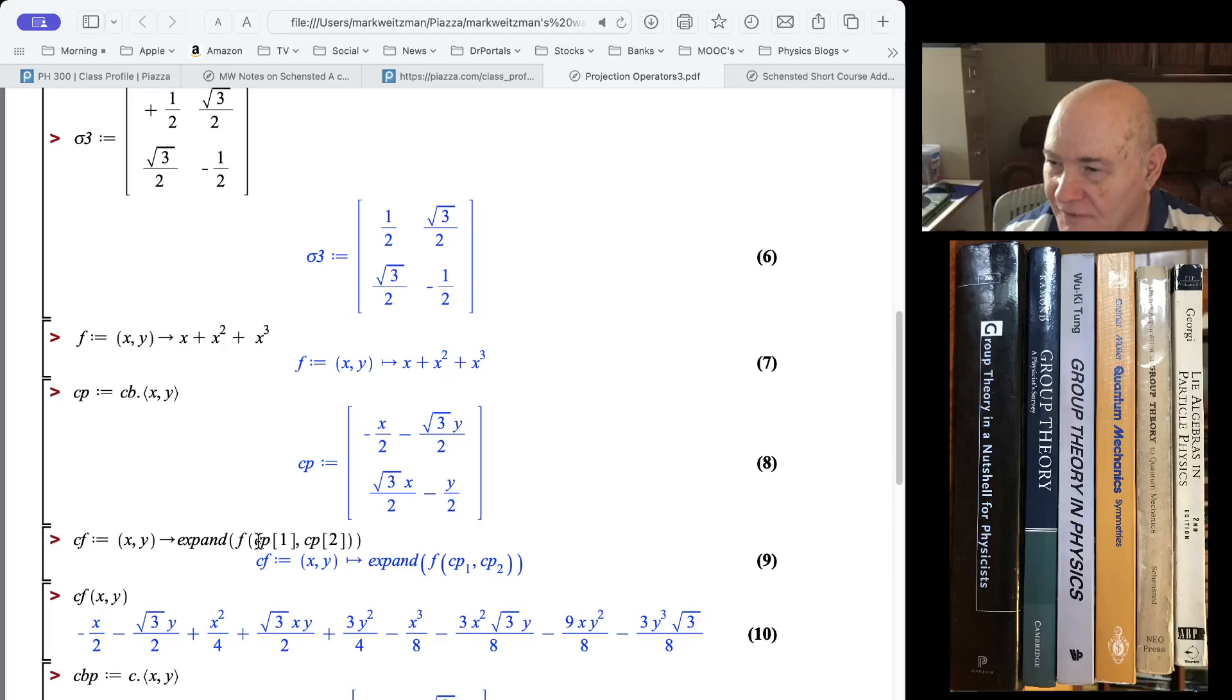So X goes to minus X over 2 minus square root of 3 over 2 Y over 2, square root of 3 over 2 Y. And Y goes to square root of 3 over 2 X minus Y over 2.